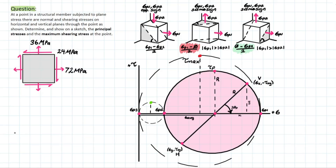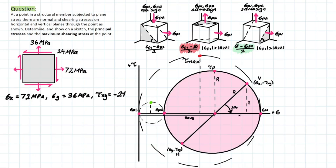As we get into the problem, we can start off with the basics. We have to identify what our stresses are. We have a stress at x of 72 MPa. The stress at y, acting tensile — meaning it's positive — will be 36 MPa. And we have the shear stress τ_xy. If we imagine the y-axis, this is acting in the opposite direction, so we actually have to take this as negative 24 MPa.